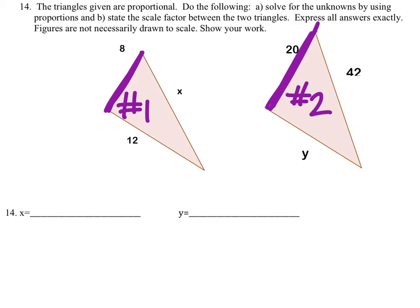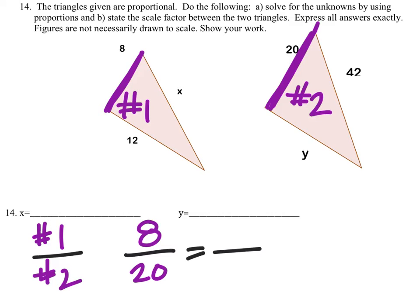In my proportions, I'm going to put triangle 1 in the numerator and triangle 2 in the denominator for each. When I set up my proportions, triangle 1 has a length of 8, and the corresponding length on triangle 2 is 20. When I want to solve for x, which is this length, it's from triangle 1, so it goes in the numerator as well, and its corresponding value is this 42.